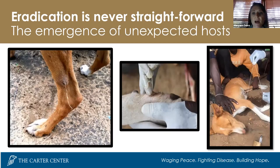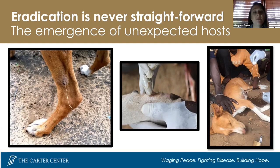Eradication is not straightforward. One significant challenge has been the emergence of guinea worm infections among animals. During 2010 and 2011, cases were detected in Chad, appearing incidental with no links to common sources of infection. In 2012, guinea worm infections were detected among domesticated dogs, and the following year among cats. The lack of epidemiological links between human cases and the high ratio of animal infections supported the hypothesis that consumption of a contaminated aquatic paratenic or transport host was driving guinea worm transmission in Chad.